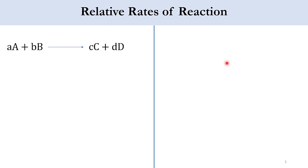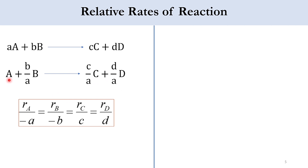Consider a reaction where A and B are reactants with stoichiometric coefficients a and b, and C and D are products with stoichiometric coefficients c and d. We take A as the limiting reactant, making its stoichiometric coefficient 1 by dividing through by a. So the relative rate expression becomes: −R_A/a = −R_B/b = R_C/c = R_D/d. This is the overall definition of the relative rate of reaction.